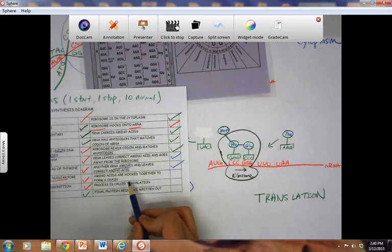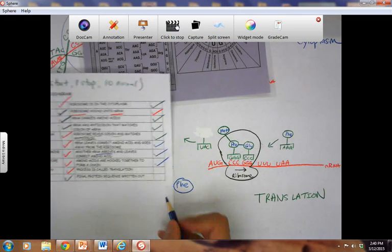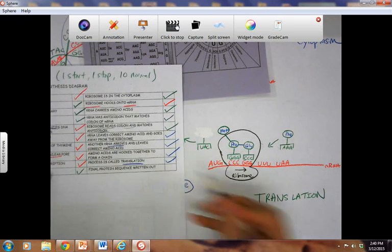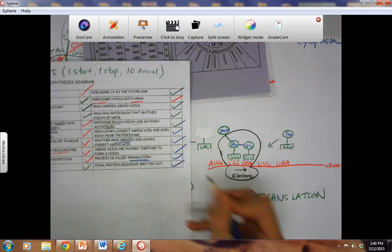Amino acids are hooked together to form a chain. We have it here. And these are our peptide bonds here. The final process is called translation. We labeled it here. And the final protein sequence is written out.